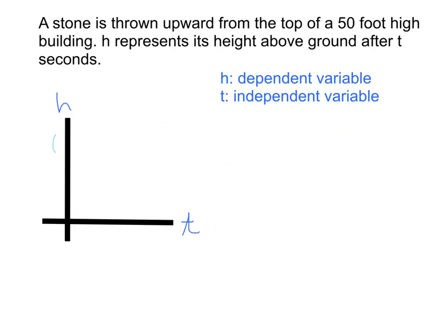Now let's think about what the height of the stone would be when time equals 0, meaning just before the stone is thrown. Since the problem says the stone is thrown from the top of a 50-foot-high building, that means when t is 0, the stone would be 50 feet above ground, meaning at the top of the building. So, we'll put a dot right here on the h-axis, and that would really be at 50 feet. Now we're doing qualitative graphs in this section, so we don't really need to scale that axis, but in this case we do know that that point would be placed at 50 feet above ground.